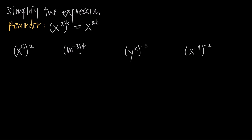In this video, we're talking about negative exponents and power rule. We've already talked about power rule, which tells us that when we have x raised to the power of a, and then we raise that whole thing to the power of b, that's the same thing as x to the a times b. We just multiply the two exponents together to create one new exponent on the base of x. This formula is called power rule and helps us simplify exponent problems.